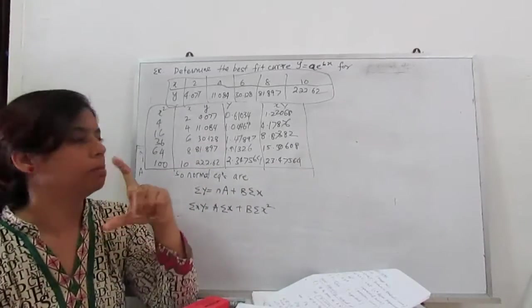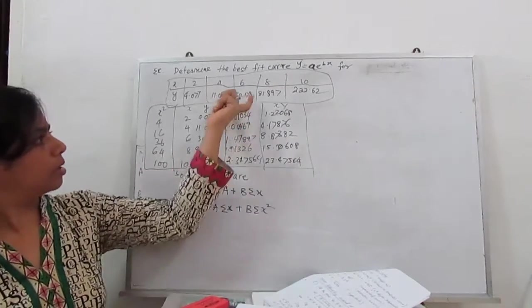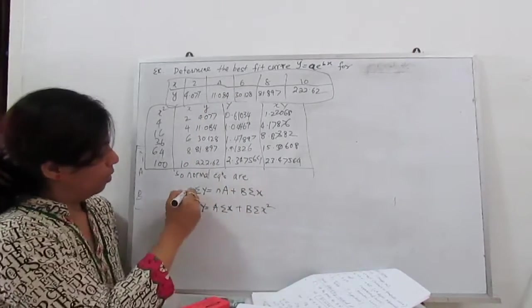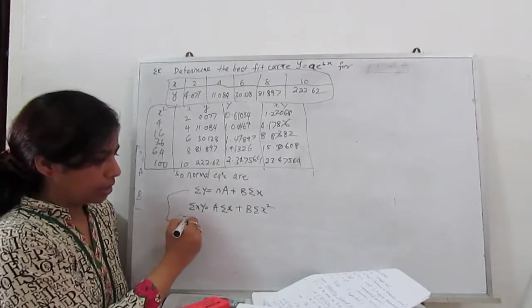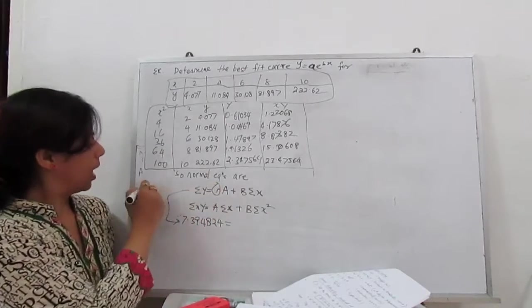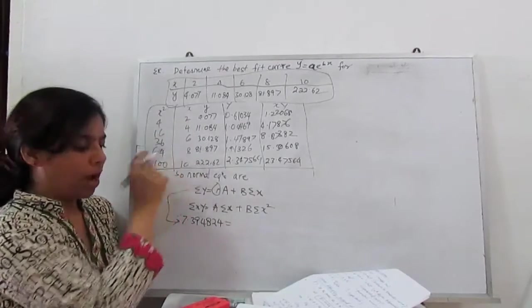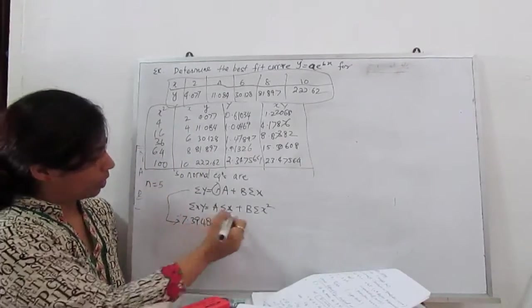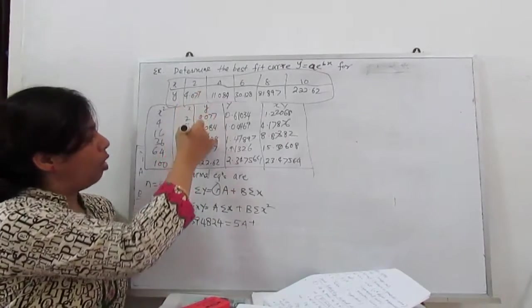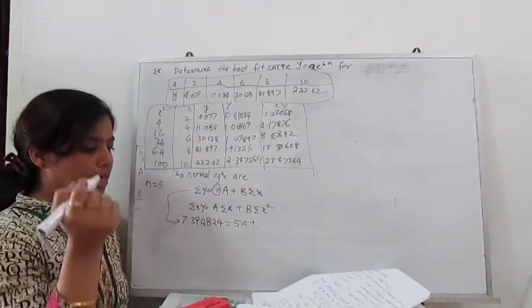So first value is summation Y, sum of this. Summation Y is 7.394824, equal to n. What is n? n is number of terms given. So 1, 2, 3, 4, 5. So n is 5. So we can write 5A plus summation x, sum of x, 10 plus 8 plus 6 plus 4 plus 2. So that is 30. So 30B.